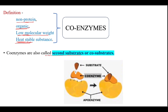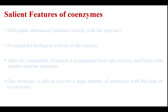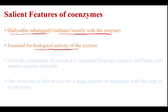Coenzymes are also called second substrates or co-substrates because they bind to the enzyme. Coming to the salient features of coenzymes: coenzymes are dialyzable substances, meaning they combine loosely with the enzyme and can be easily separated from it. They are essential for the biological activity of the enzyme — some enzymes are only functional in the presence of coenzymes.